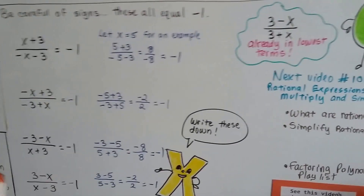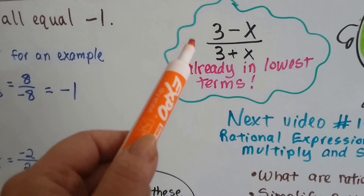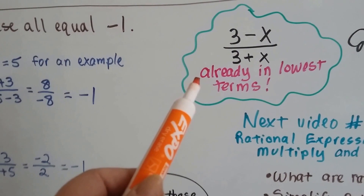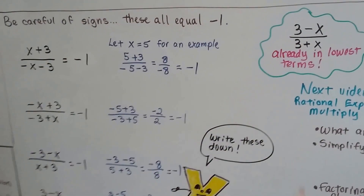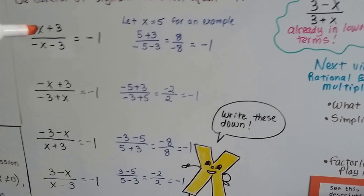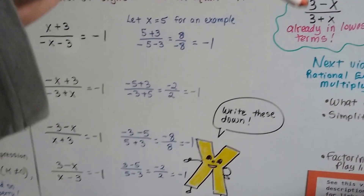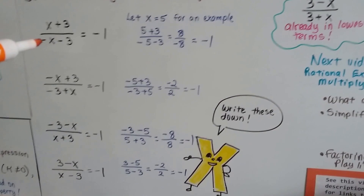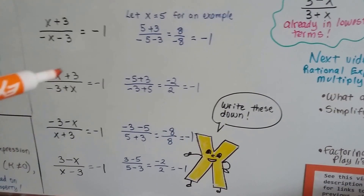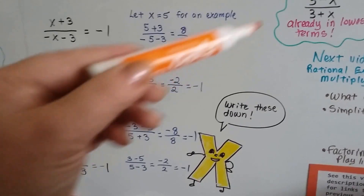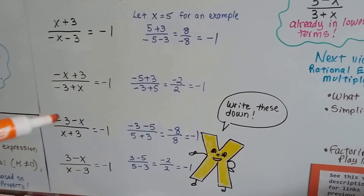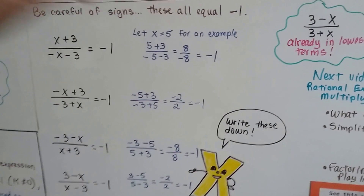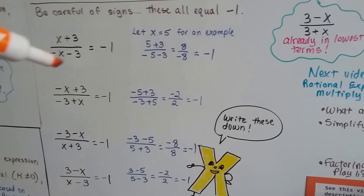Now, if you have 3 minus x over 3 plus x, this one is already in lowest terms — it does NOT equal negative 1. Why? Look at the signs. The expressions that equal negative 1 each have 2 negative signs. This one only has 1 negative sign. That's the key difference.